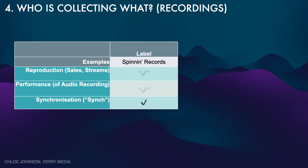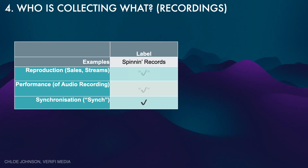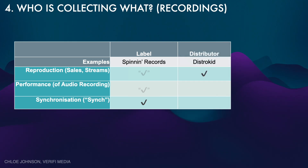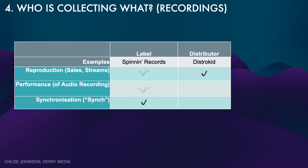The first that many people think of is your label. If you're signed to a label or you act as your own label, you will be responsible for reproduction, performance, and synchronization rights. But you may be giving those rights over to your distributor. That distributor takes the manufactured CDs or digital downloads and distributes them to DSPs on your behalf, collecting payments made for the sale of physical items, downloads, or streaming money, and passing that back to the label who passes it back to you.